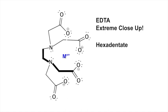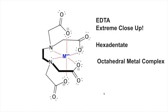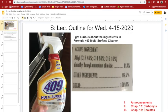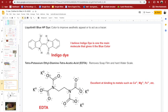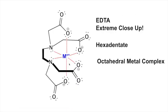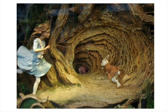EDTA is a hexadentate ligand — it binds a metal through six 'teeth': four oxygens and two nitrogens — forming an octahedral metal complex. If it grabs calcium from hard water scum, the rest of the molecule washes away. If it binds metals in food, those metals can't catalyze oxidation reactions, making it an effective preservative.